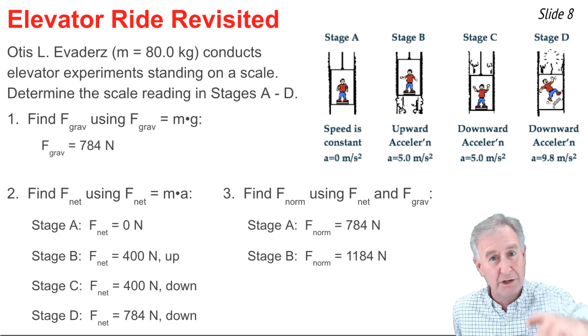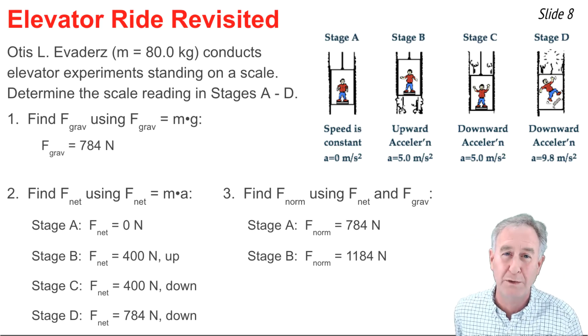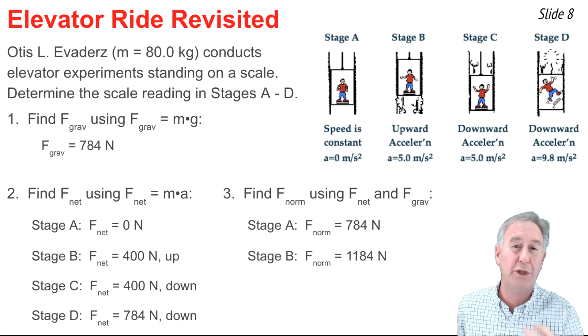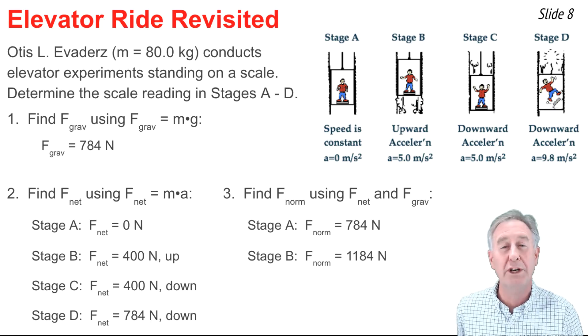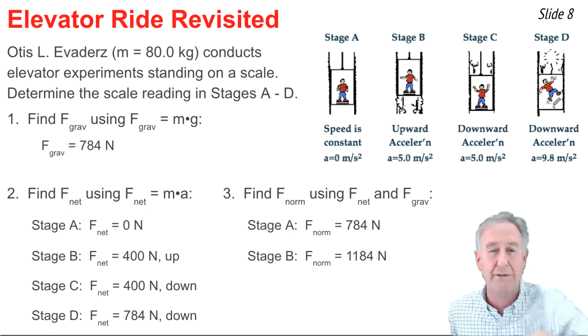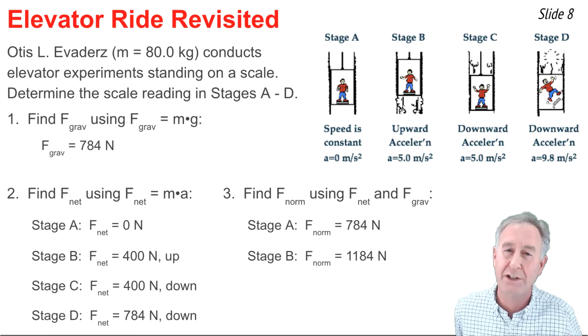In stage C, the winner is the down force, wins by 400 newtons, which means the up force lost by 400 newtons, and so it's 400 newtons less than the 784 down force.